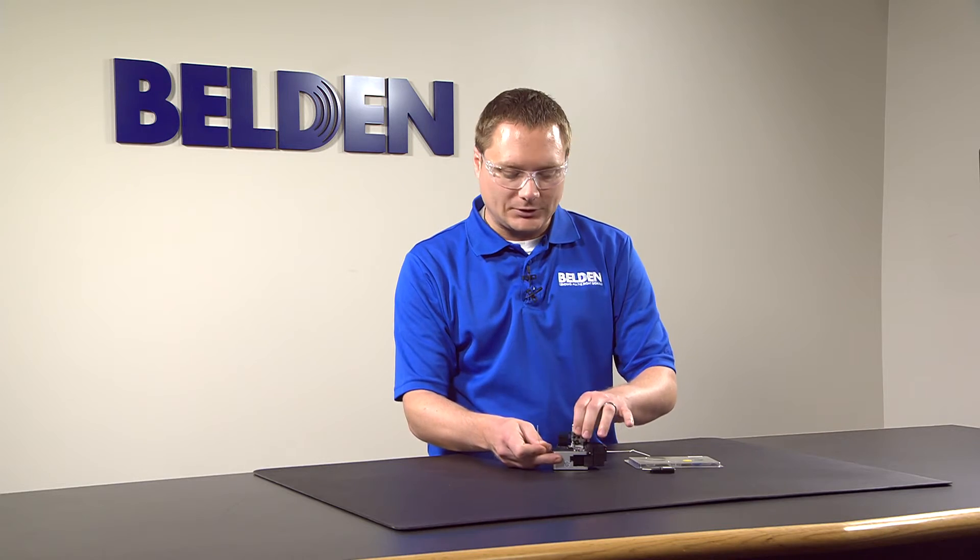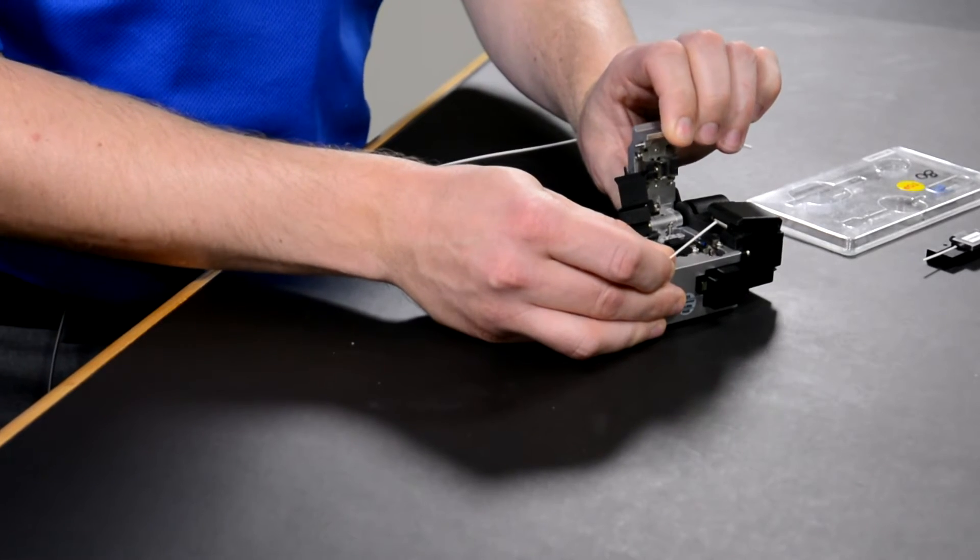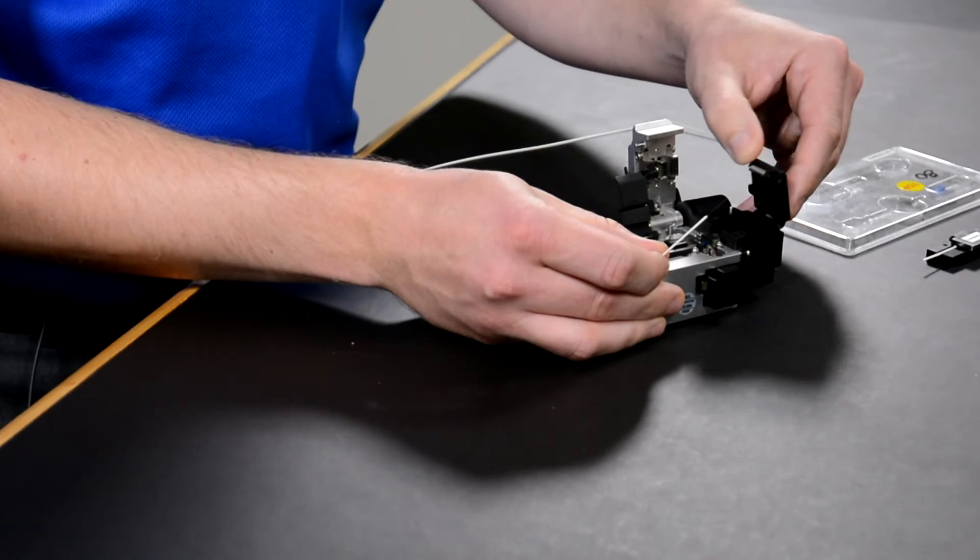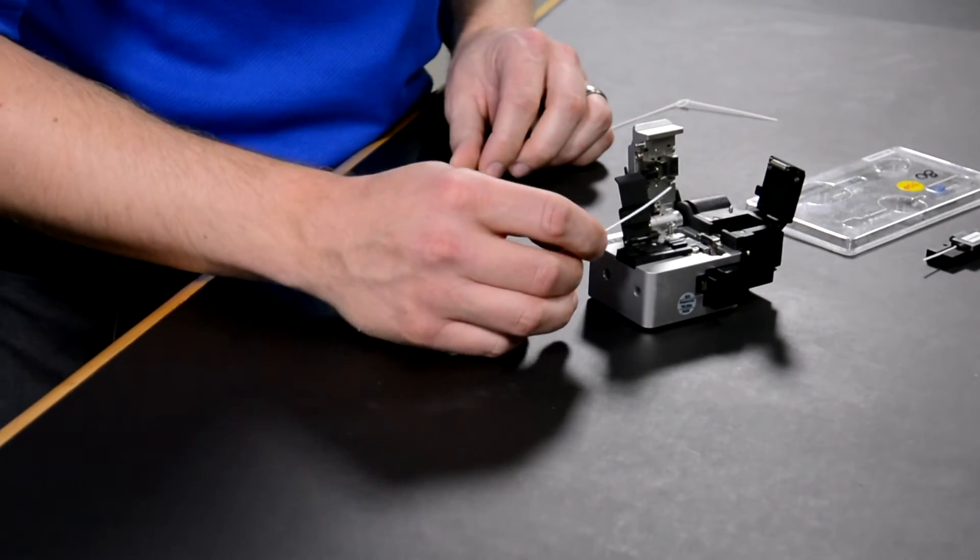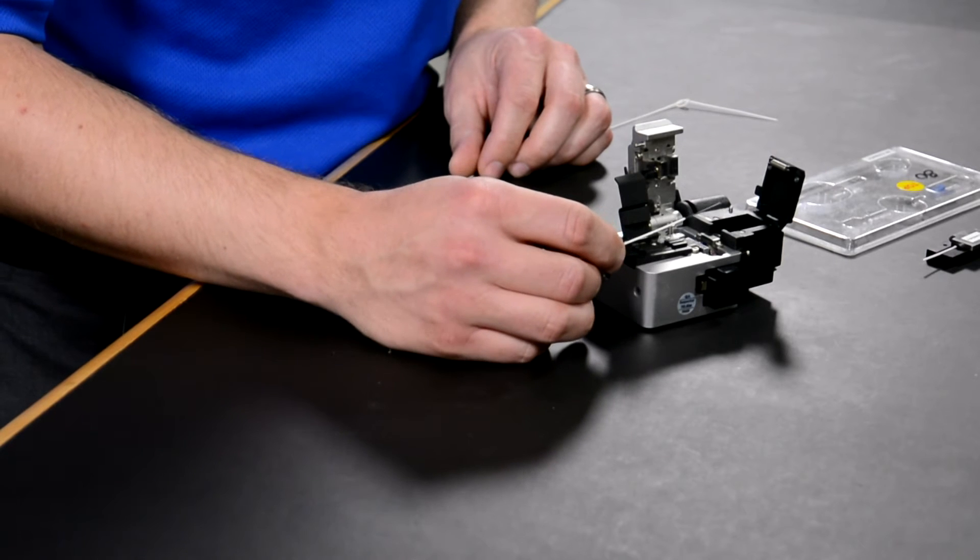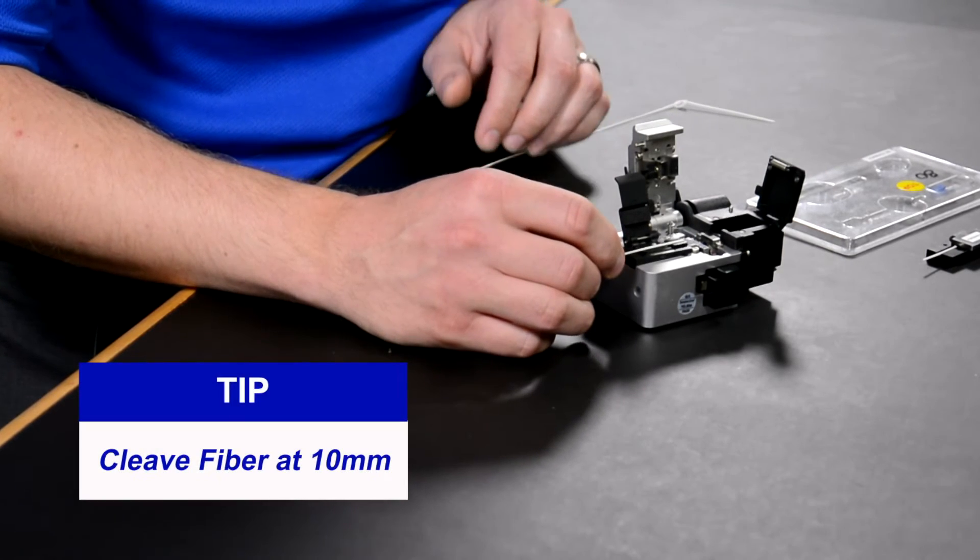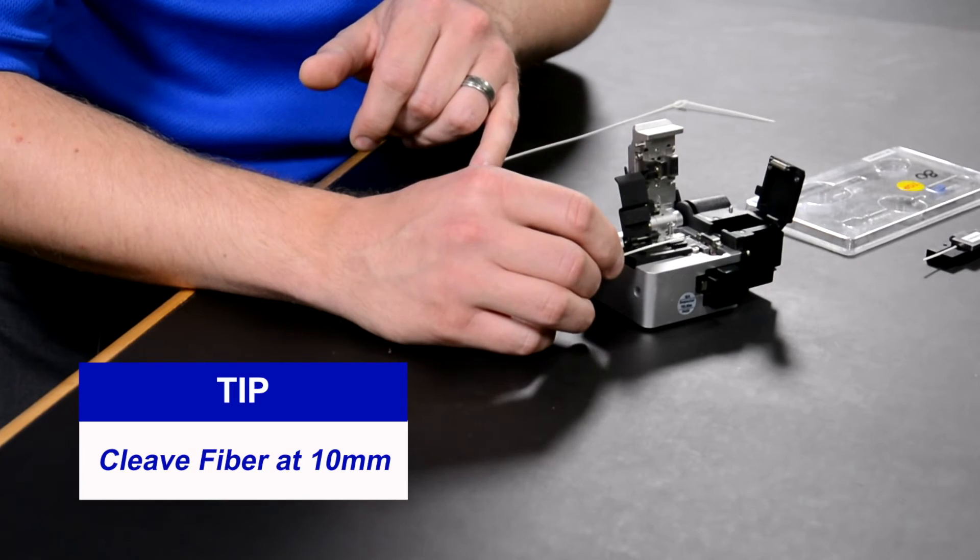The first step is to open up the cleaver until it locks in place, then open up the trash bin. Because this is 900 micron fiber, we will use the 900 micron groove and align the edge of the jacket with the 10 millimeter point on the scale.